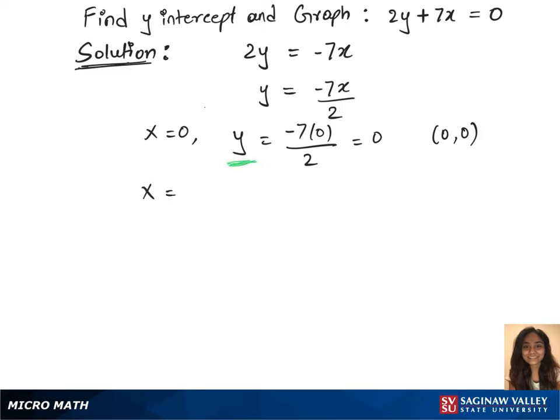We need one more point to plot this on the graph, so let's take x as 1. This time we have minus 7 times 1 over 2, which gives us minus 7 over 2, which is minus 3.5. We have another point now: 1 comma minus 3.5.